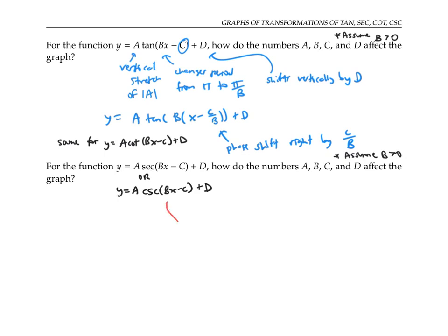The only thing to be careful of is that b now changes the period from two pi to two pi over b, simply because the original period of secant and cosecant is two pi, whereas the original period of tan and cotan is just pi.